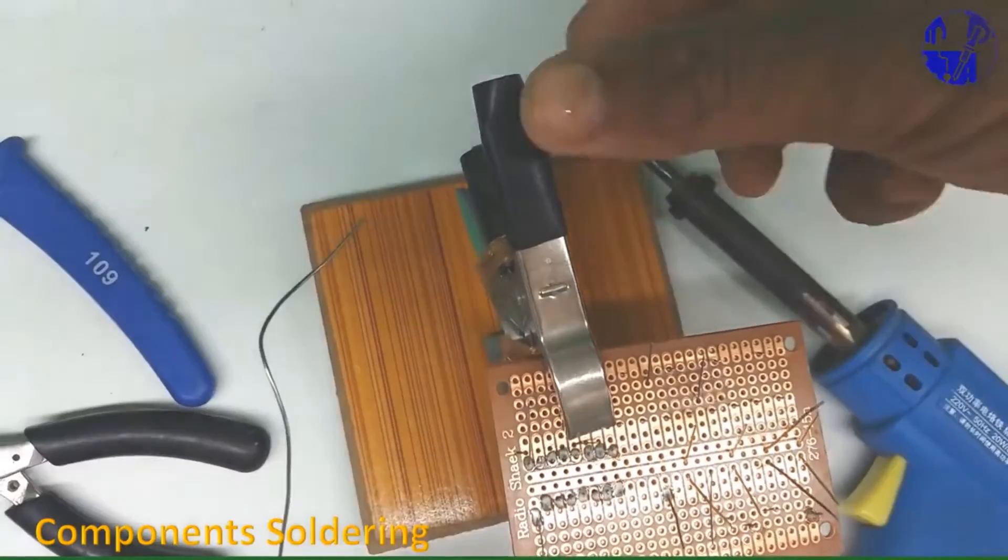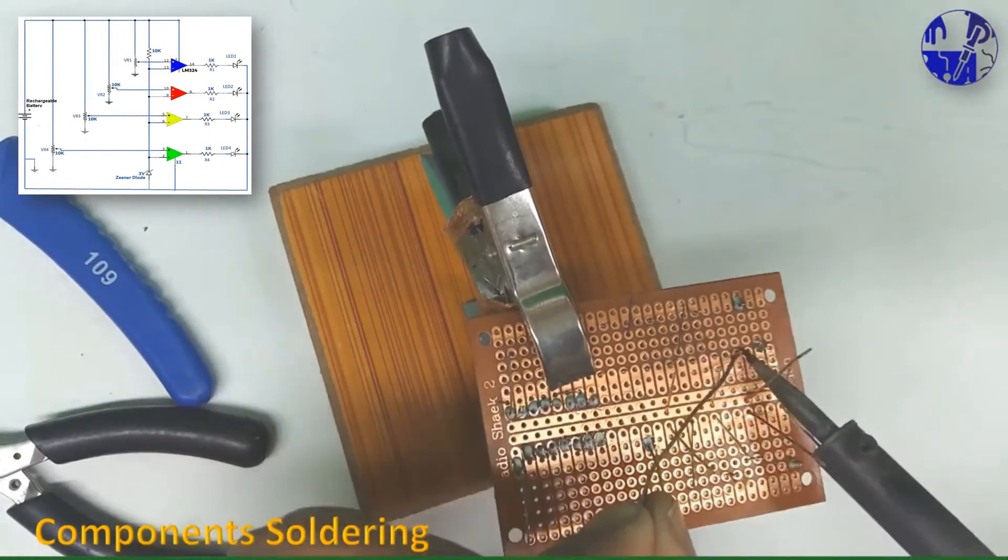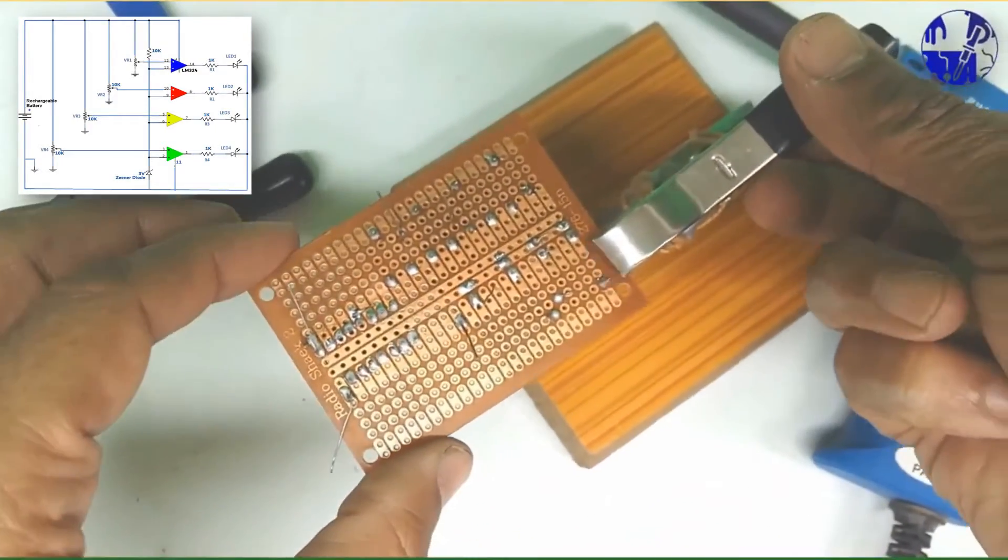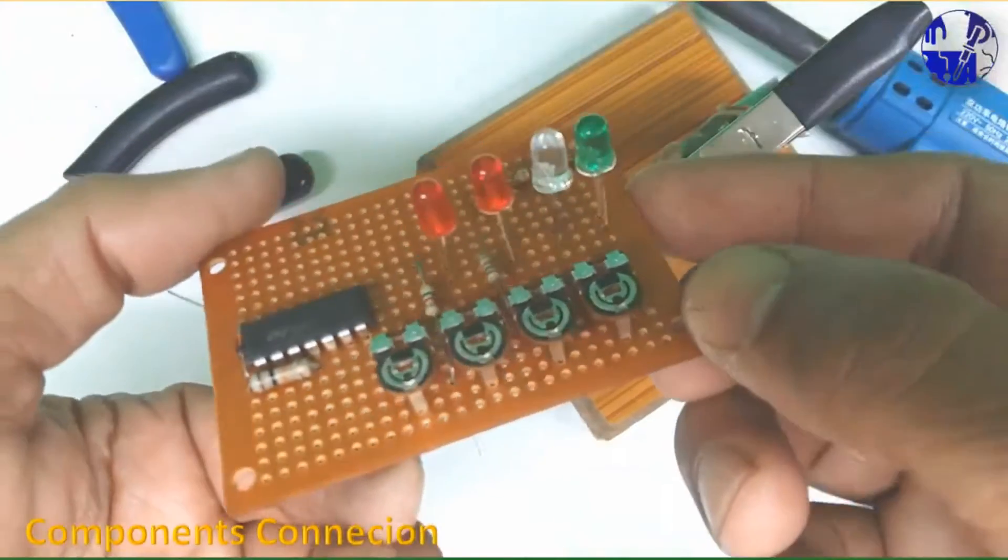Following the soldering of all components on the Vero board, proceed to make wiring connections according to the diagrams displayed on the screen. The images are available for download on our website, and the link can be found in the description section.